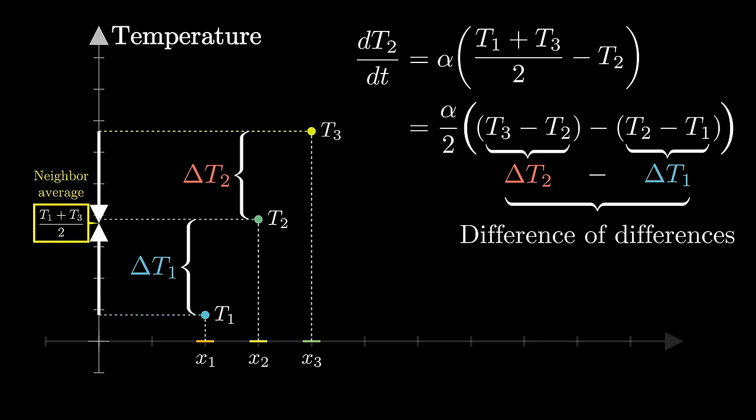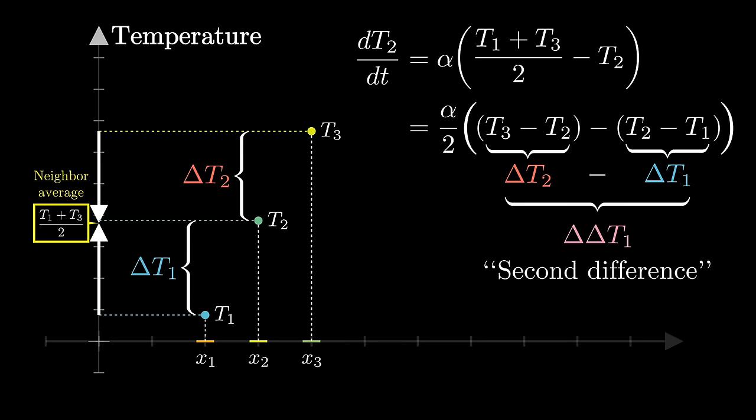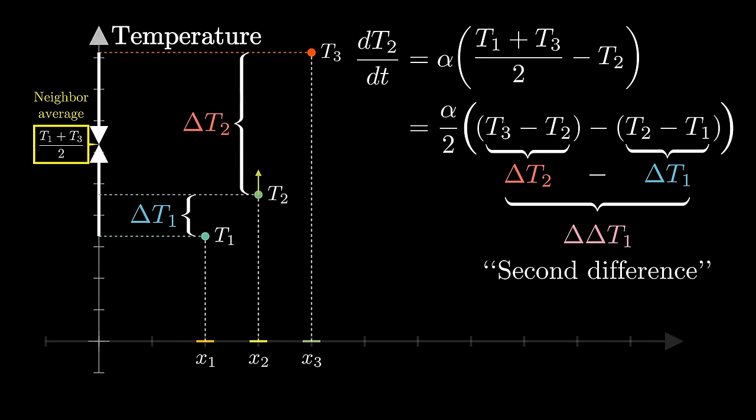We could be especially compact with our notation and write this whole term, the difference between the differences, as delta delta t1. This is known in the lingo as a second difference. If it feels a little weird to think about, keep in mind, it's essentially a compact way of writing the idea of how much t2 differs from the average of its neighbors. It just has this extra factor of one half, is all.